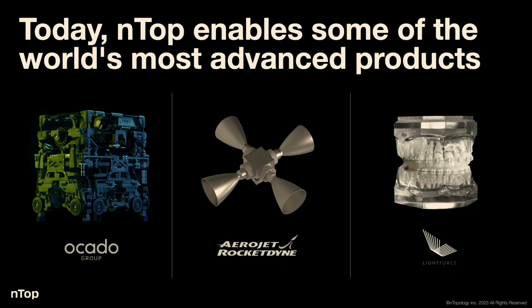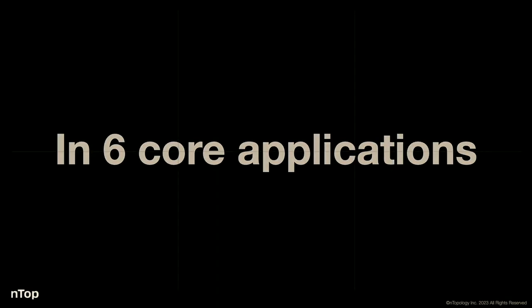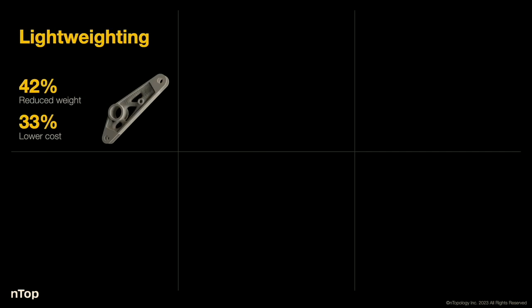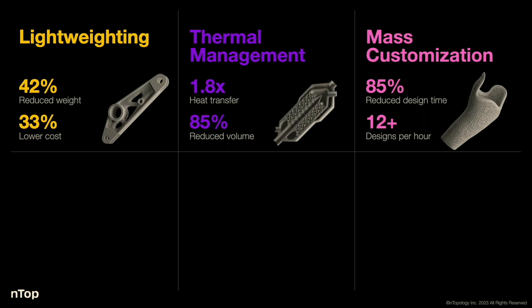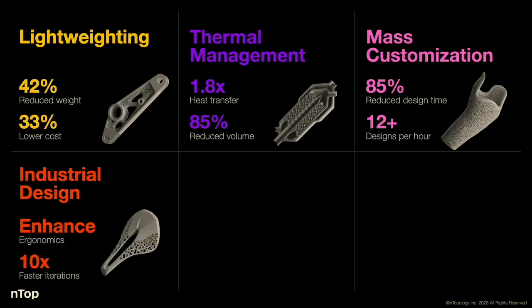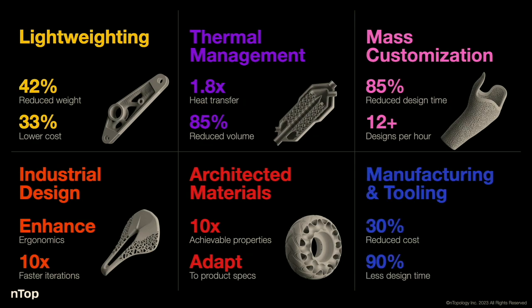We work in six main applications. First is lightweighting — probably our most common one — helping customers reduce the weight of parts, lower the cost, and increase strength. Second is thermal management: increasing heat transfer and reducing volume. Third is mass customization: reducing the time to design complex, patient-specific parts — in this case, 12 designs per hour. Fourth is industrial design, enhancing ergonomics and performance while iterating faster. Fifth is architected materials: achieving a wide range of material properties using lattices. Sixth is manufacturing and tooling: reducing the cost of jigs, fixtures, and molds.